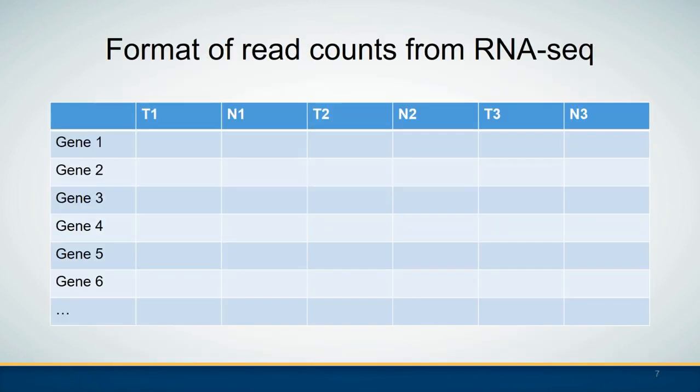Here is an example of expression data for RNA-seq, which is also called the read count data. In this matrix, the rows represent different genes and columns represent samples. In this example there are three tumor samples and three normal samples.